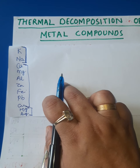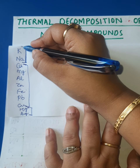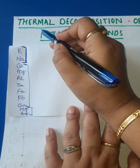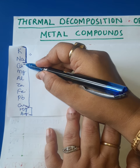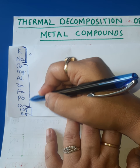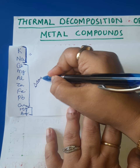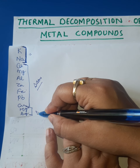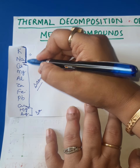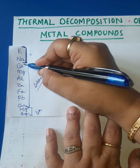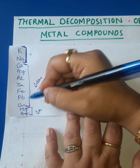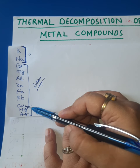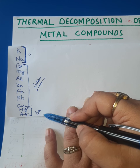Why divide into three categories? Because the behavior of these metals and their compounds towards heat is different. Potassium and sodium behave differently. Calcium to copper metals all behave the same towards thermal decomposition. Mercury and silver also behave the same towards thermal decomposition, so we study them together in their respective categories.